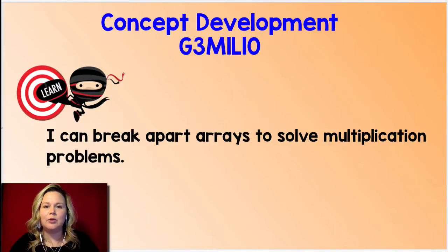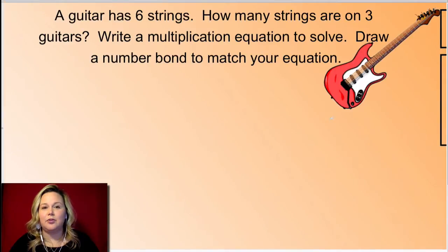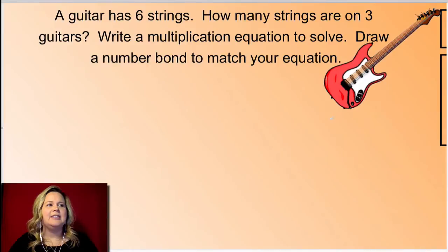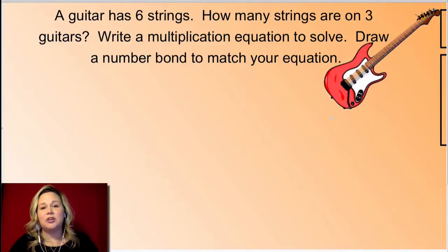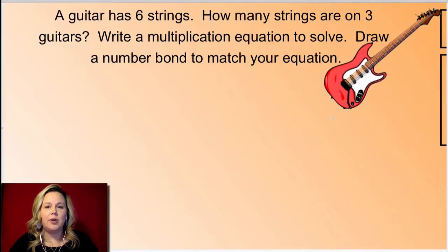So that's exactly what we're going to do today, friends. Let's jump in and get started with a problem that's going to set us up for most of the rest of our work today. You're going to need your dry erase board for this. A guitar has six strings. How many strings are on three guitars? Write a multiplication equation to solve, and then draw a number bond to match your equation.